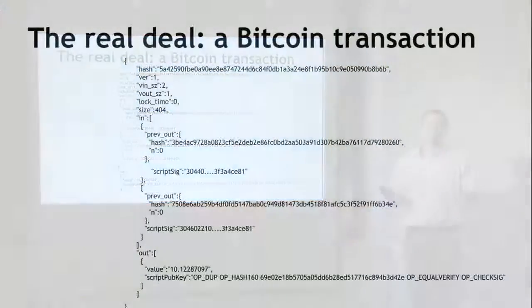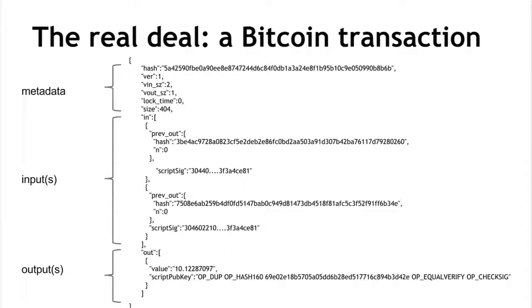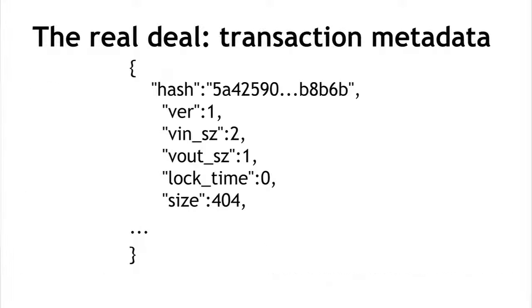Let's look at what a Bitcoin transaction looks like at the low level. This isn't exactly what a Bitcoin transaction looks like — it's a pretty-printed representation, somewhat like JSON. In reality there's a compact binary format, but this is very close to the actual low-level transaction. There are three parts: some metadata, a series of inputs, and a series of outputs. The metadata includes the size of the transaction, the number of inputs and outputs, the hash of the entire transaction which serves as a unique ID for hash pointers, and a lock time parameter.